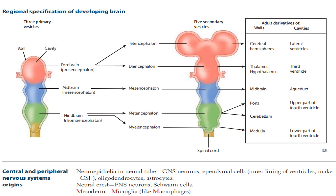We have the three primary vesicles: the forebrain, midbrain, and hindbrain — also called prosencephalon, mesencephalon, and rhombencephalon. These are further divided into five secondary vesicles. The forebrain divides into telencephalon and diencephalon. The midbrain remains as mesencephalon. The hindbrain divides into metencephalon and myelencephalon.